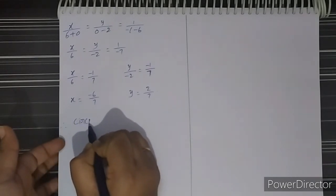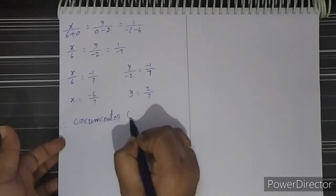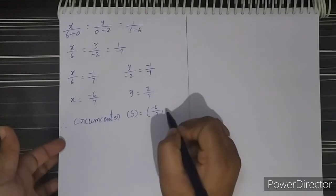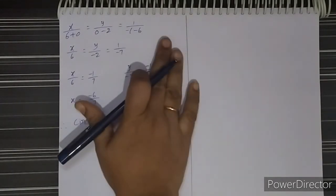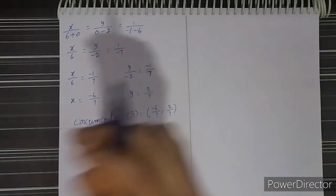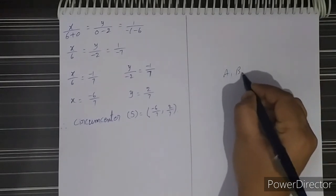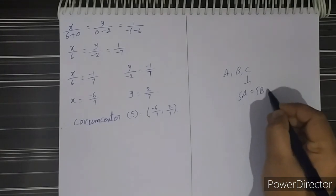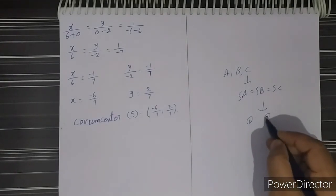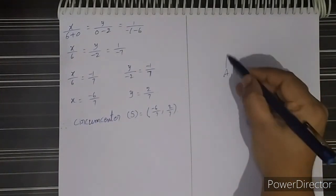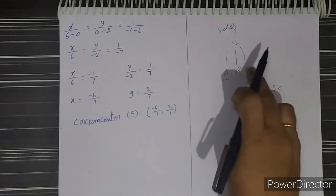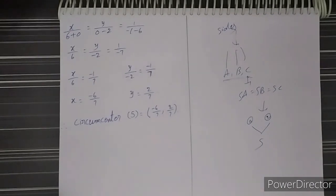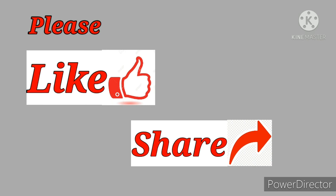Therefore, the circumcenter of the given triangle is found. This problem is similar to the previous one, but in the previous problem the vertices A, B, C were given directly, so we used the condition SA = SB = SC to get two equations and solved them. Here, we were given the side equations, so we first solved them to get the vertices, and then followed the same procedure. Thanks for watching our video. For more videos, please like, share, subscribe to our channel and hit the bell icon.